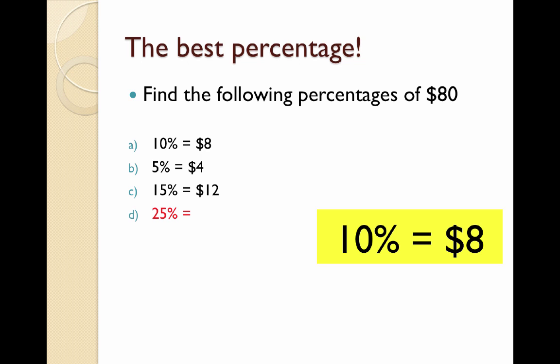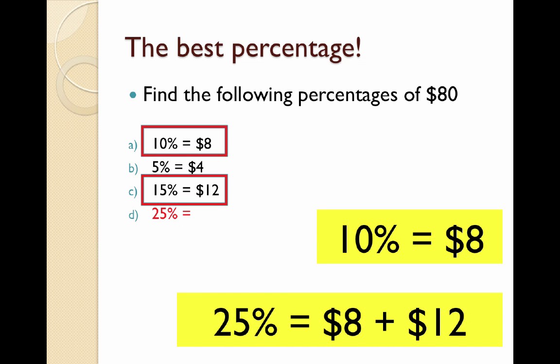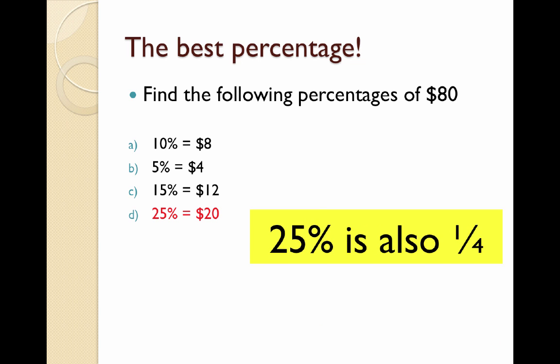What if I wanted to find 25%? Well, 25% is 10% plus 15%, or $8 and $12, which is $20. Remember, 25% is also a quarter, so you could have divided by 4 to get the same answer. There are lots of different ways to get the same answer—you just need to find the best one for you.